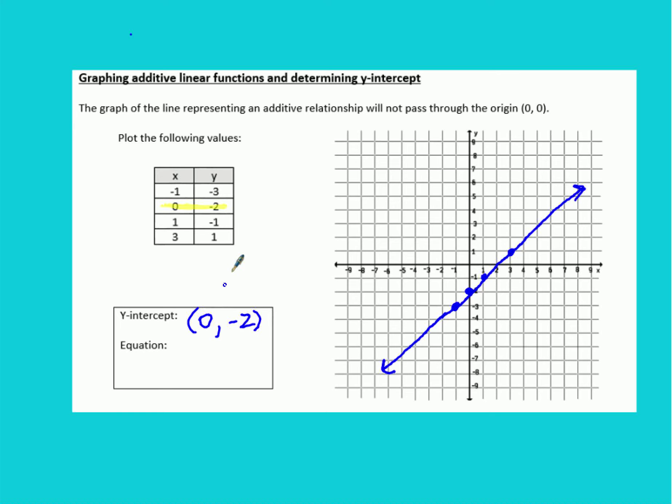Now to create the equation for this we want to figure out, well we know it's an additive relationship. We can see that the slope here is just 1. For every block we go up we go over 1 so the slope is just 1 over 1. That means we can use that rule that we talked about in the last video of y equals x plus b.